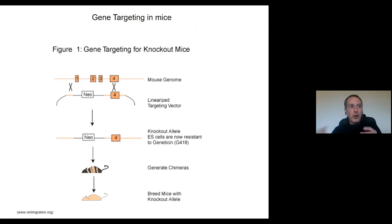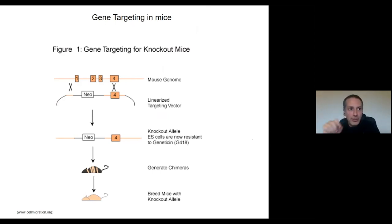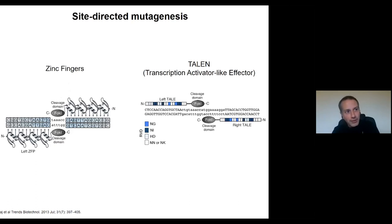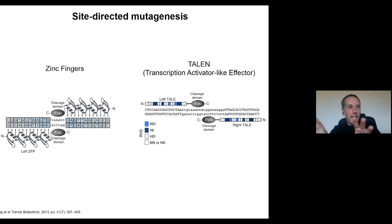Is CRISPR revolutionary? Conceptually, not so, because there were already several techniques used to induce mutations randomly, as we already discussed with radiation. But targeted mutagenesis was already possible to perform — for instance, by homologous recombination using embryonic stem cells in mice, or with other techniques like zinc fingers and TALENs, which are very similar to CRISPR. The problem is that these techniques require months of development of tools to target a specific sequence in the genome — you need to build new proteins that will recognize a specific sequence and then cut DNA.